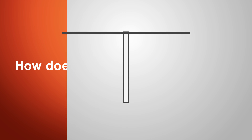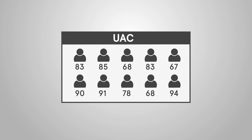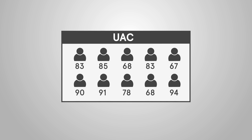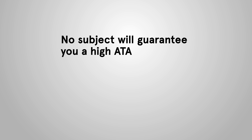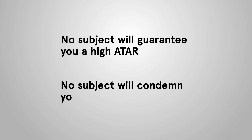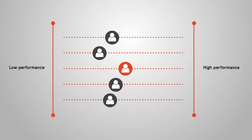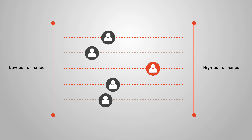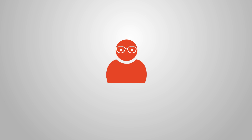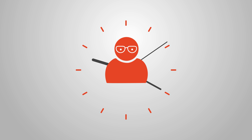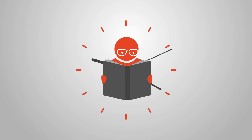Then the serious scaling begins. UAC scales according to the performance of all the students that year — not whether we think courses are hard or easy. No subject will guarantee you a high ATAR, and no subject will condemn you to a low ATAR. The poorer the overall performance of the cohort taking a course, the closer to the top of the state you need to be in order to benefit from scaling. There's no way to game the ATAR system — your time is much better spent studying for your exam.